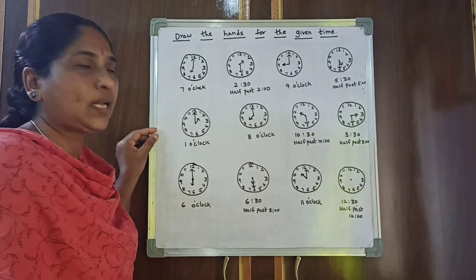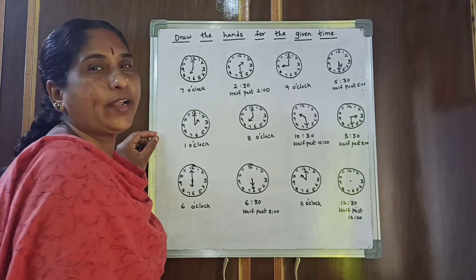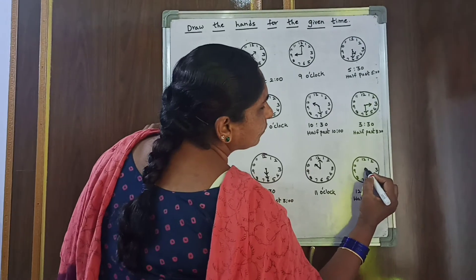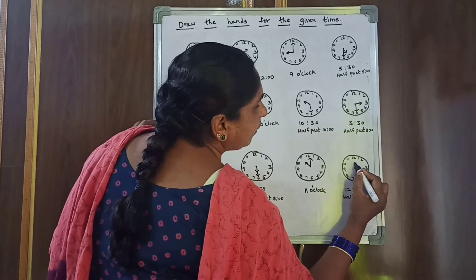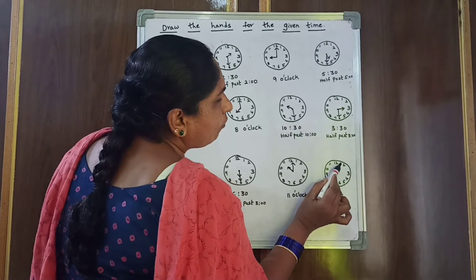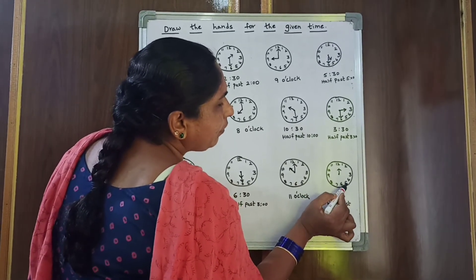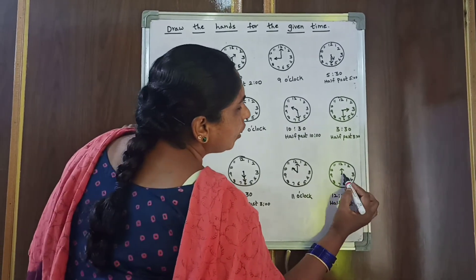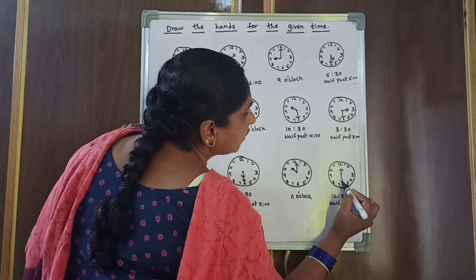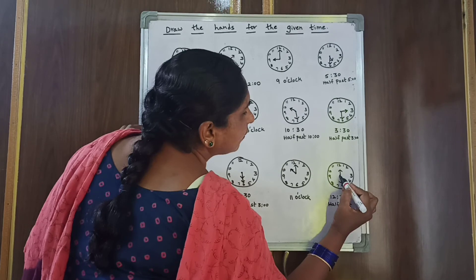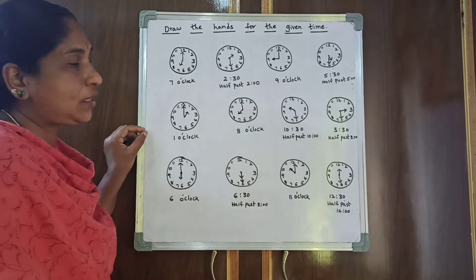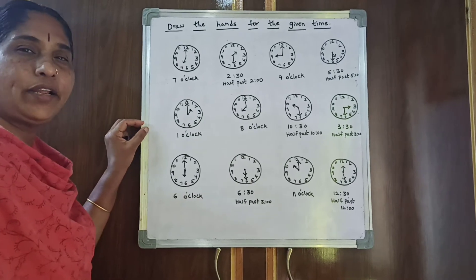Coming to the last one: 12:30, or half past 12. 12 is the hour hand — short hand — so from the middle draw to 12. And 30 means: 5, 10, 15, 20, 25, 30 — long hand goes to 6. So this is 12:30 or half past 12. Is it clear children?